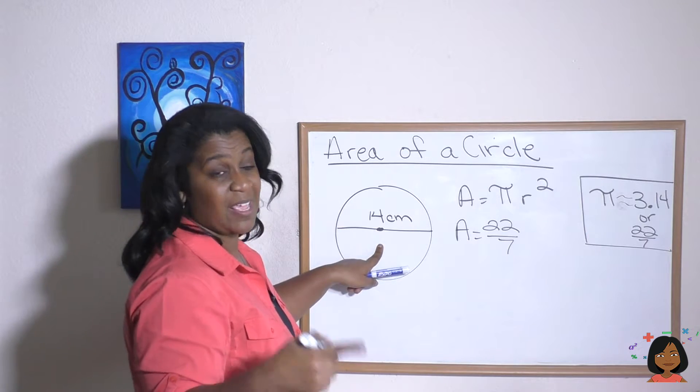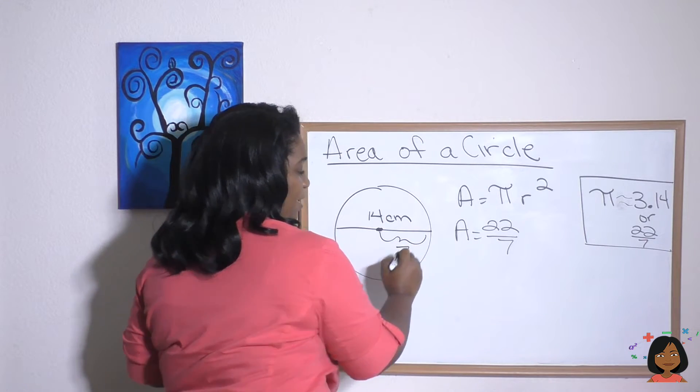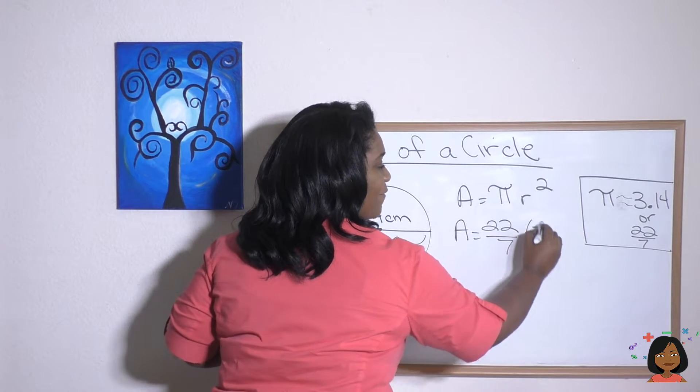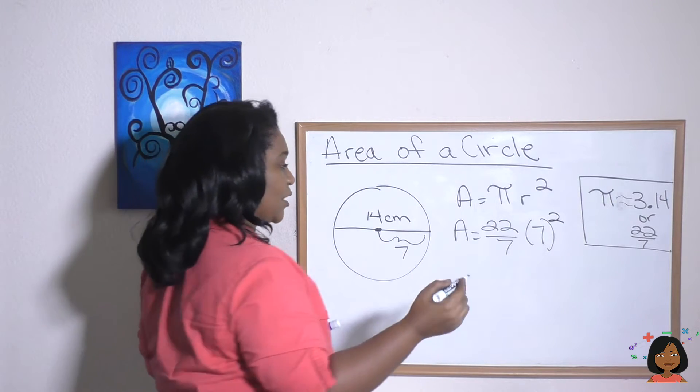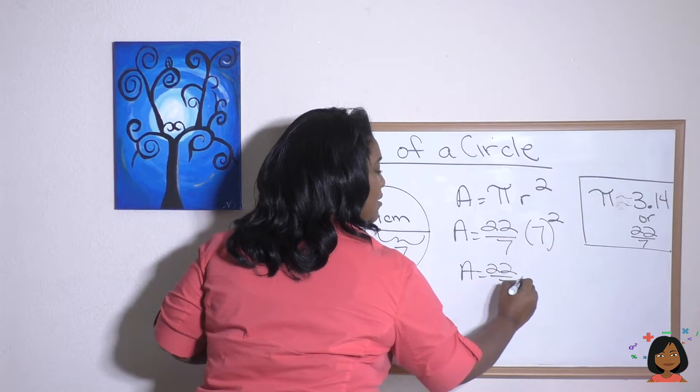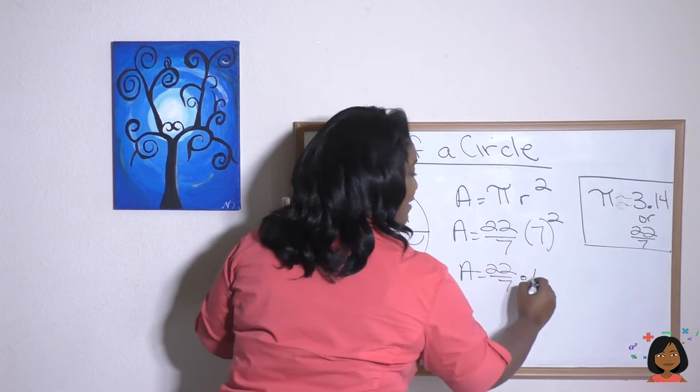Well, our radius is not 14. Our radius is going to be half of 14. It's just this piece, which is seven. So we're going to take seven squared. Okay, so let's rewrite it. Area is 22 sevenths times seven times seven is 49. That's what seven squared is.